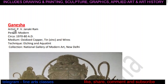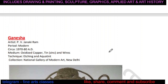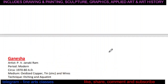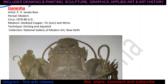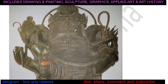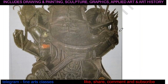If we look at all the sculptures, they are all about social injustice or the labor class. But the fourth sculpture is something different — this is Ganesha by artist PV Janki Ram, modern period, circa 1970–80 AD. The medium is oxidized copper, tin or zinc, and wires, using the technique of etching and aquatint. The collection is the National Gallery of Modern Art, New Delhi.